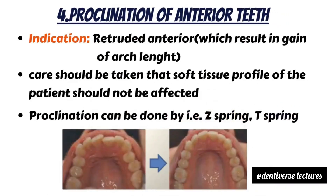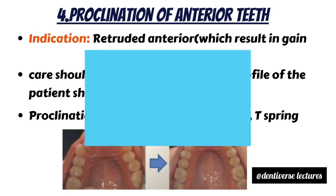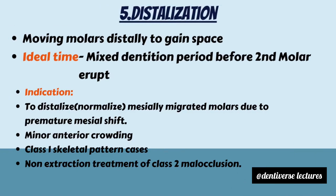Care should be taken that the soft tissue profile of the patient should not be adversely affected. Proclination can be achieved by Z-spring and T-spring. The fifth method is molar distalization, in which molars are moved distally to gain space. The ideal time is at the mixed dentition period, before eruption of the second molar.